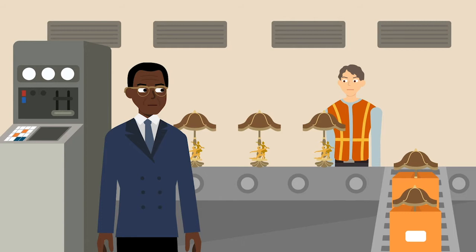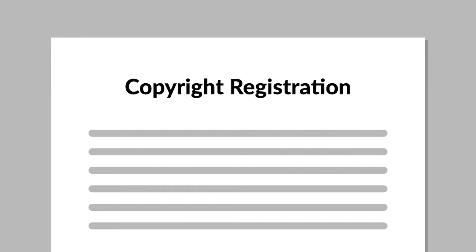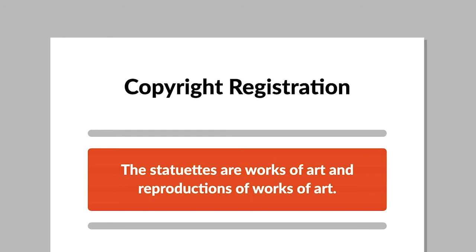After selling some of the copies in lamp form, Stein registered the statuettes, without any lamp fittings, for copyright protection as works of art and reproductions of works of art. Copies were then sold throughout the country, predominantly as lamp bases.